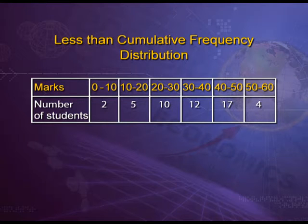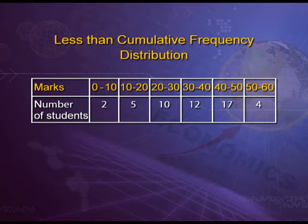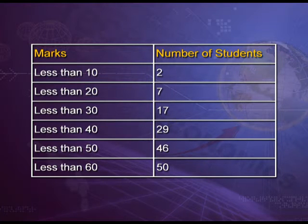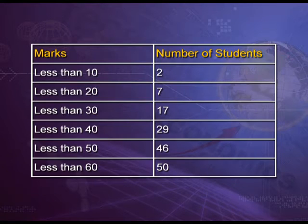We have a table in which marks are taken from 0 to 10 till 50 to 60 and the number of students are 2, 5, 10, 12, 17 and so on. It can be explained in the form of cumulative frequency. Less than 10 is equal to 2; less than 20 is equal to 7, obtained by adding 2 plus 5. In the similar manner, 17 is obtained by adding successive units and so on. This is known as cumulative frequency series.